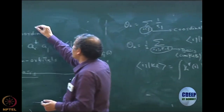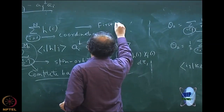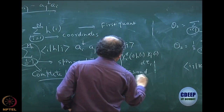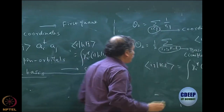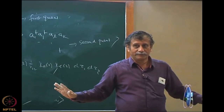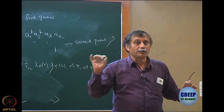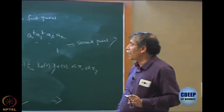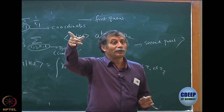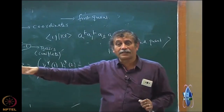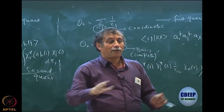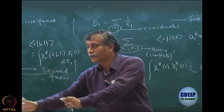One of the important features of second quantization is that the operators now do not depend on the number of electrons — this is a very significant feature. You may argue that instead you are using many basis functions, but basis functions will come into your calculations anyway. Better to bring them into the operator so that the form of the operator remains invariant for N electrons, N+1 electrons, N−1 electrons, whatever you are doing.